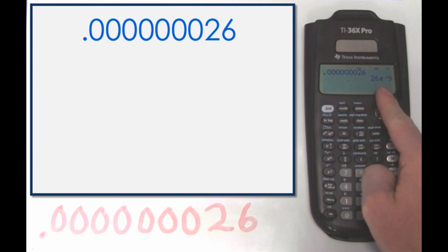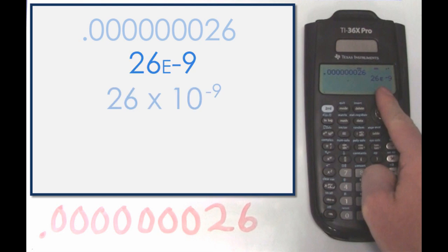So to recap, we've started with 26 hundred millionths, which was way too complicated. Entering our calculator function of engineering notation, we get 26e to the negative 9, which is the same as saying 26 times 10 to the negative ninth.